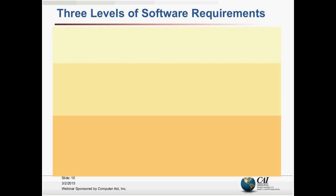Let's start with some definitions. If I showed a particular requirement statement to a bunch of you listening to this presentation, you might call it different things. Somebody might say that's a functional requirement, a software requirement, a user requirement, a business requirement, a stakeholder requirement, a feature, or a user story. We'd have all sorts of different labels for that one requirement statement. So the very first thing we have to do in any conversation about requirements is get our vocabulary straight.